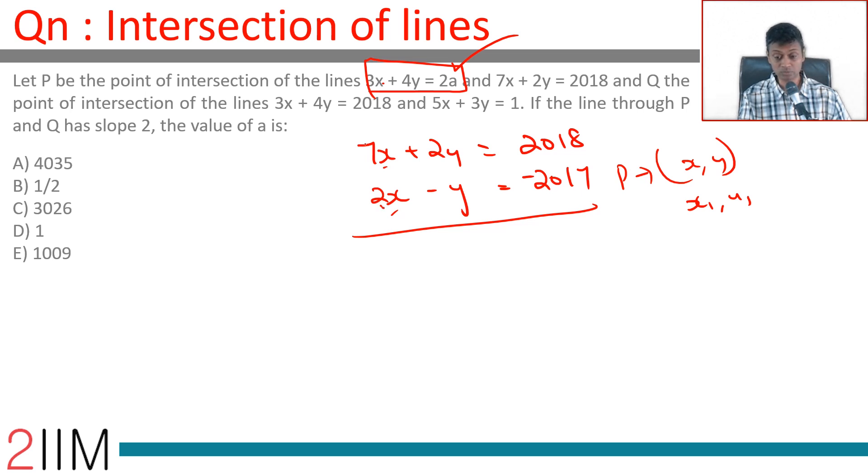To get 3x we can multiply this by 2 and subtract. Multiply this by 2 we will have -2y, we subtract you will get 4y. We multiply this equation by 2: 4x - 2y = -4034.